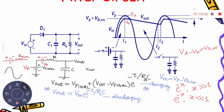The discharging begins in the first half cycle after the peak. During the second (negative) half cycle, there is no charging since the anode potential is negative. In the third half cycle, the anode potential rises again and eventually Va − Vk reaches Vd_on, triggering the diode to conduct and recharge the capacitor.